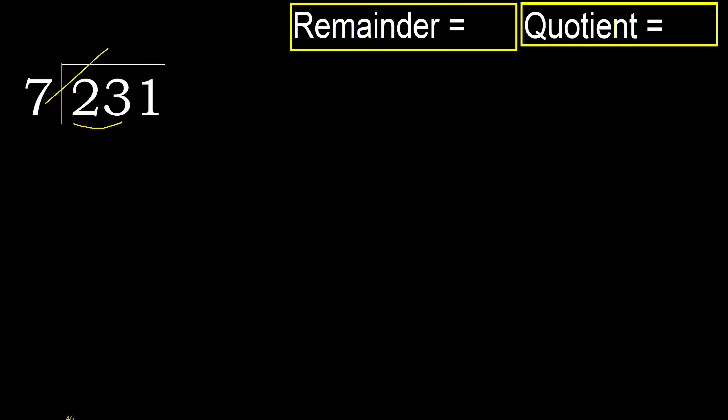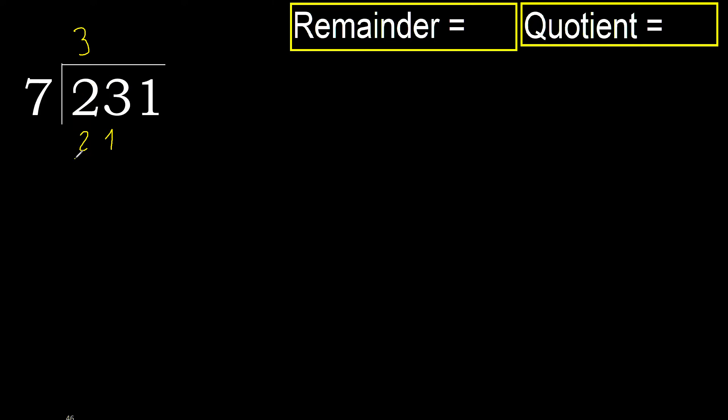7 multiplied by which number is nearest to 23 but not greater? 7 multiplied by 4 is 28, which is greater. 7 multiplied by 3 is 21, which is not greater. Subtract: the remainder is 2.